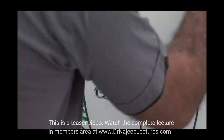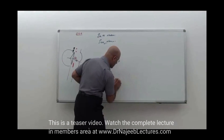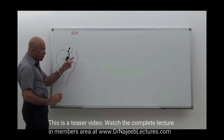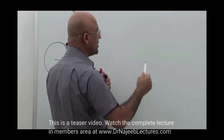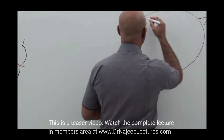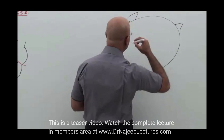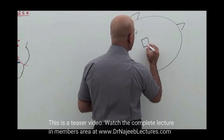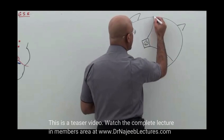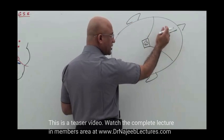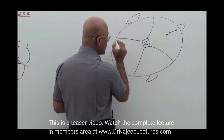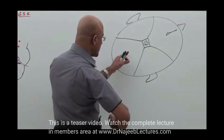After it exits from there, as it moves forward — I will make a diagram here. Here is your nose and here are your ears. Where the pituitary sits — here is the anterior cranial fossa, here is the middle cranial fossa, and here is the posterior cranial fossa.